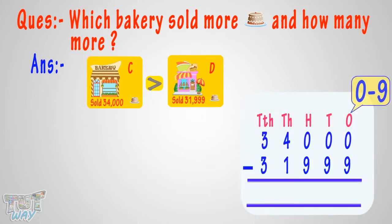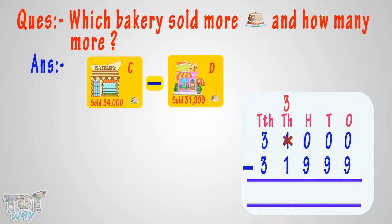We can't subtract 9 from 0. So borrow 1 from the 10's digit. But the 10's digit is 0. So the 10's digit will borrow 1 from the 100's digit. Cross 4, make it 3, and give 1 to 0 at the 100's place. Now cross 10 at the 100's place, make it 9.